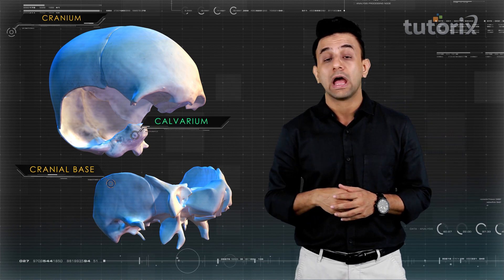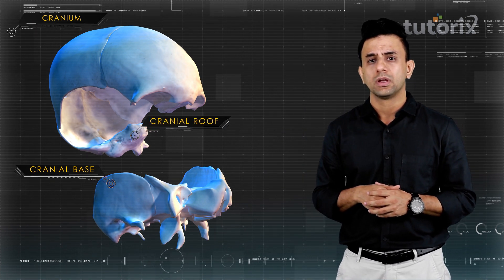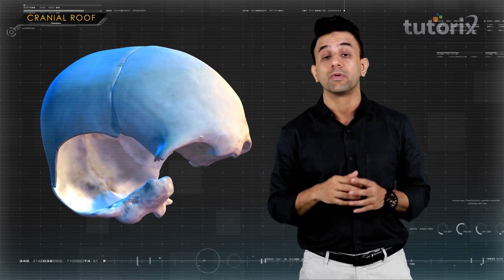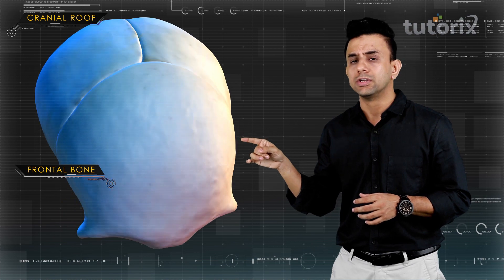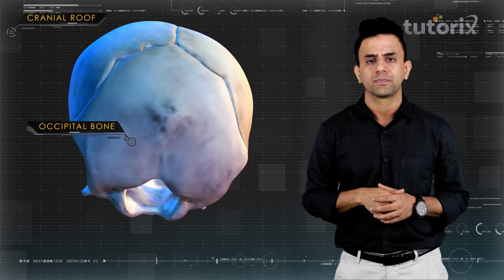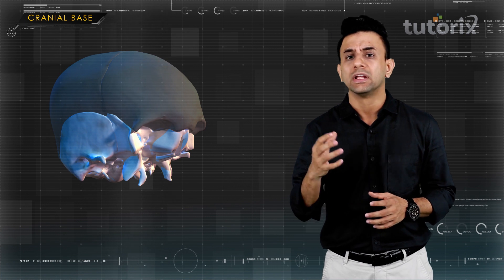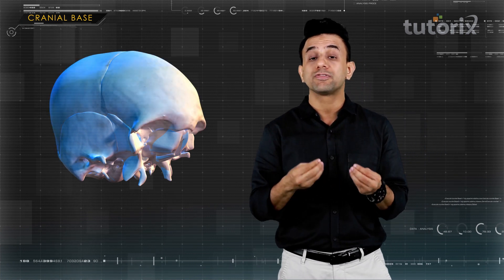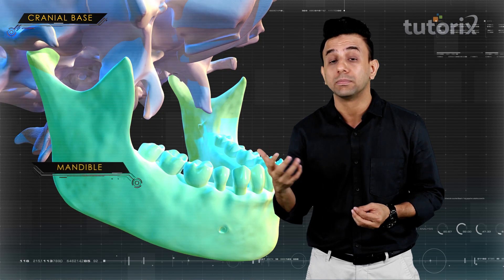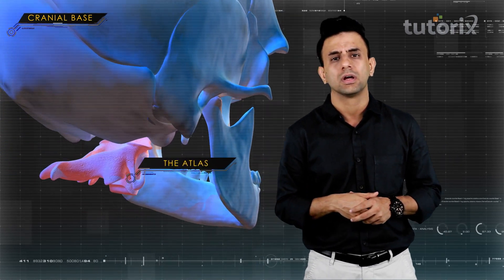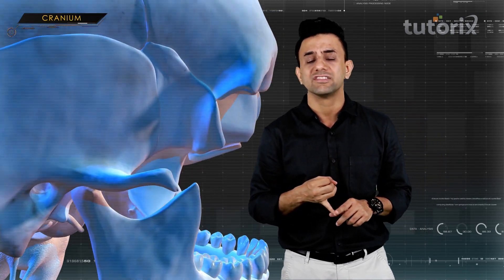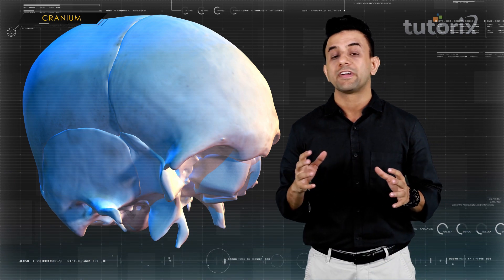The cranial roof is also known as the calvarium. The calvarium is made up of three bones: the frontal bone, the two parietal bones, and the occipital bone. The cranial base forms the base of the cranial vault and serves as a point of articulation for the facial bones like the mandible, as well as for the first cervical vertebra — the atlas.